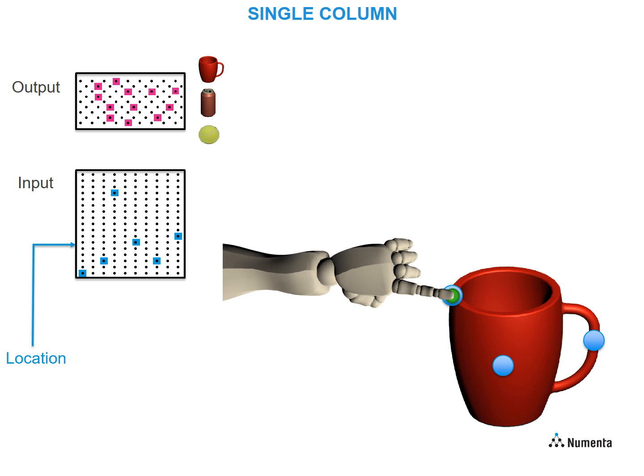Now it touches the second location. The input layer receives the next location signal and the next sensory input. That combination gets sent to the output layer. The output layer learns by integrating input over time.